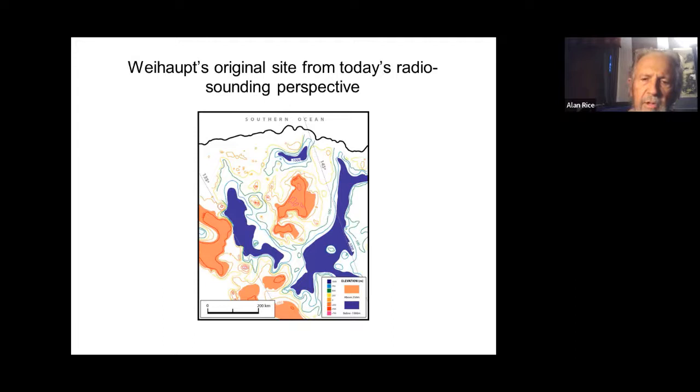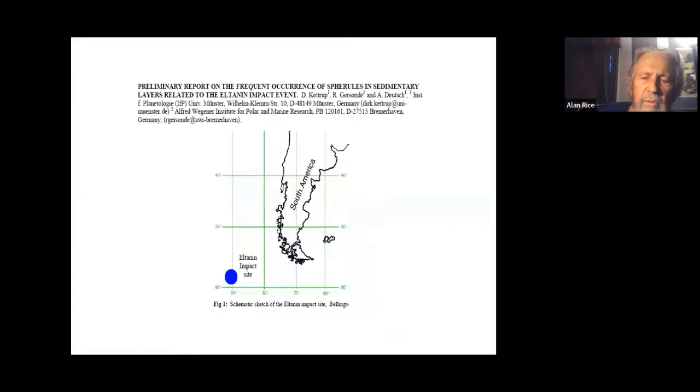This is Jack's original site from today's radio sounding perspective. You can see the round circular gravity low and the pink gravity high representing the central peak. The reason it's distorted is simply because the ice field is moving into the sea and carrying along the imprint of the impact. Now it's recognized that there were impacts in near South Africa, and a famous one is the Eltanin impact site.